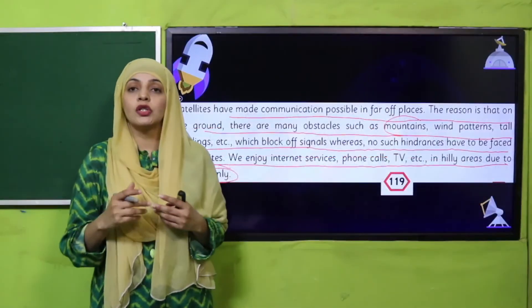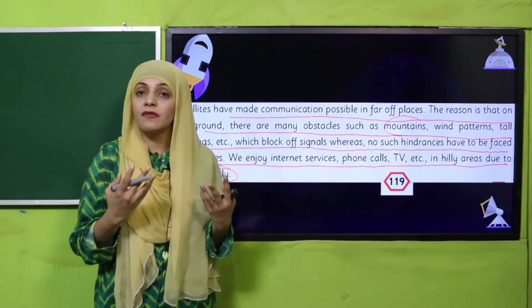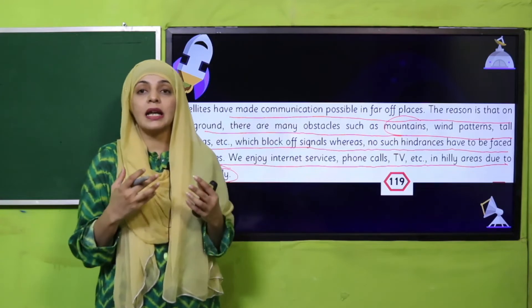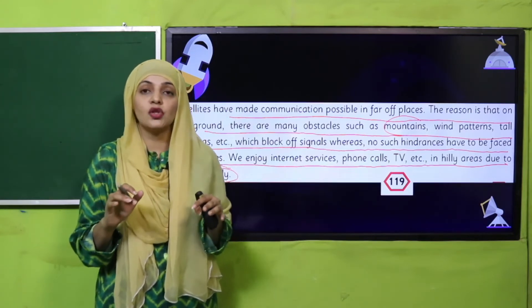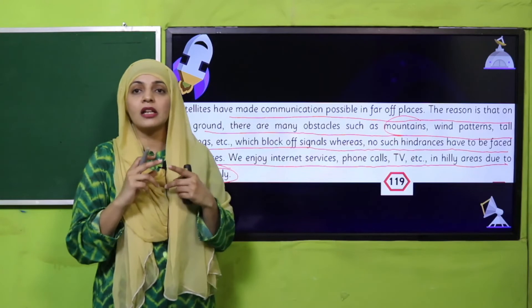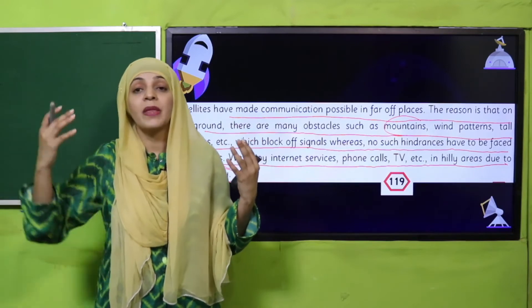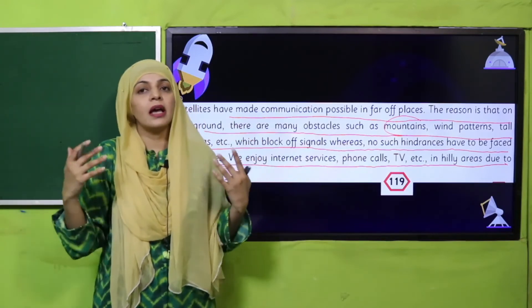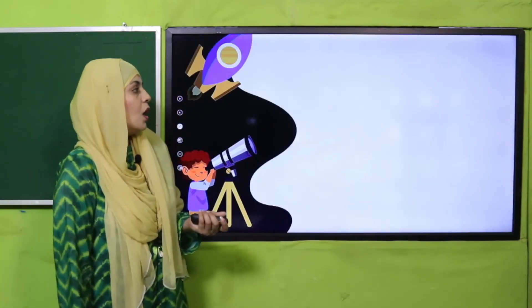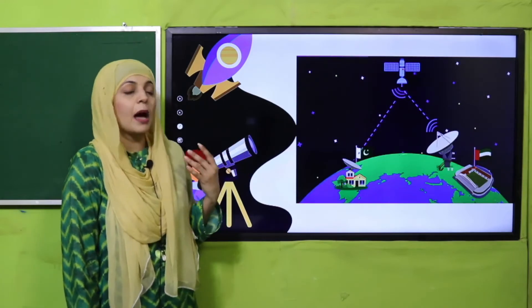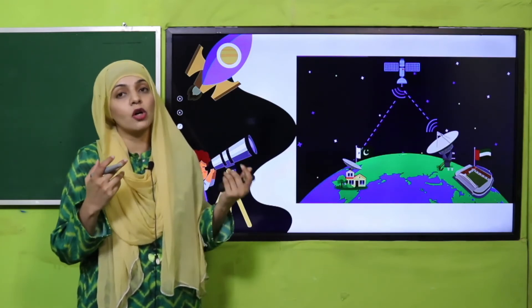In addition to TV communication and entertainment channels, internet facilities are all available through satellites without any problems. On the ground, dust particles, wind, mountains, and trees block signals and stop them. Whereas from space, no hindrance is faced. From one country to another you can communicate because of these satellites. Google Maps and all tools on your phone, tablet, or computer are available because of satellites.